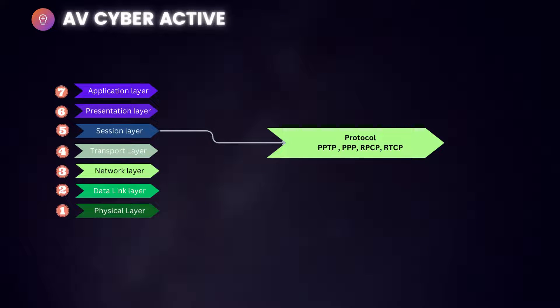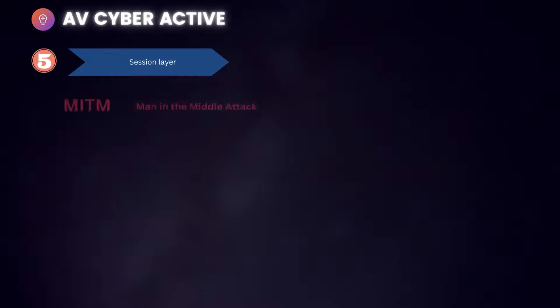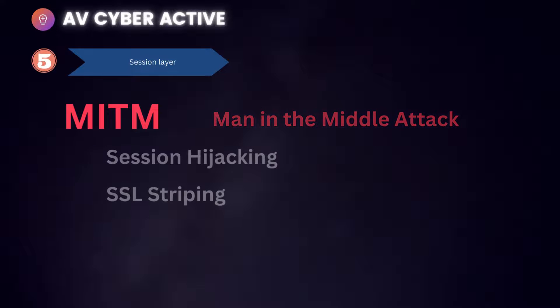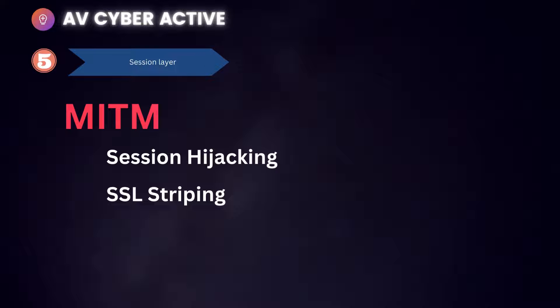The protocols used in the session layer are PPP (Point-to-Point Protocol), PPTP (Point-to-Point Tunneling Protocol), RPC (Remote Procedural Call Protocol), and RTCP (Real-Time Transport Control Protocol). For this video we'll cover two types of attacks at this layer, which fall under the broader term of MITM or man-in-the-middle attack: session hijacking and SSL stripping.